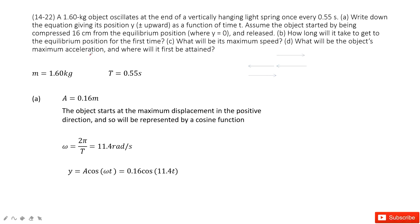We can see the quantities given: the mass of the object and the period. It tells us it springs once every 0.55 seconds, so the period T is 0.55 seconds. Then we need to write an equation about this motion.